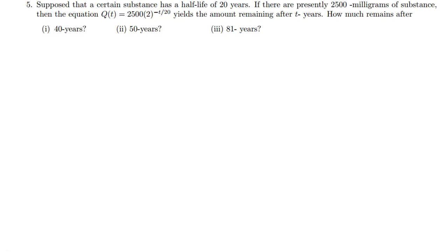Hi everyone, so let's look at question five from tutorial sheet five. The question says: suppose that a certain substance has a half-life of 20 years. If there are presently 2500 milligrams of substance, then the equation Q(t) = 2500(2)^(-t/20) yields the amount remaining after t years. How much remains after 40 years?